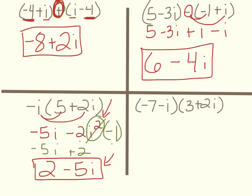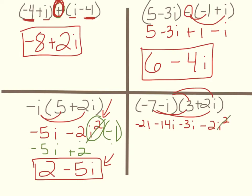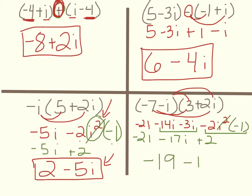This last one you actually will FOIL because there's an implied multiplication sign between them. First: negative 7 times 3 is negative 21. Outer: negative 7 times 2i is minus 14i. Inner: negative i times 3 is minus 3i. Last: negative i times positive 2i is minus 2i squared. Take your i squared, cross it out and write negative 1. So now I have negative 21, combine the i terms to get minus 17i, and then negative 2 times negative 1 is plus 2. So my real part is negative 19 and my imaginary part is minus 17i.